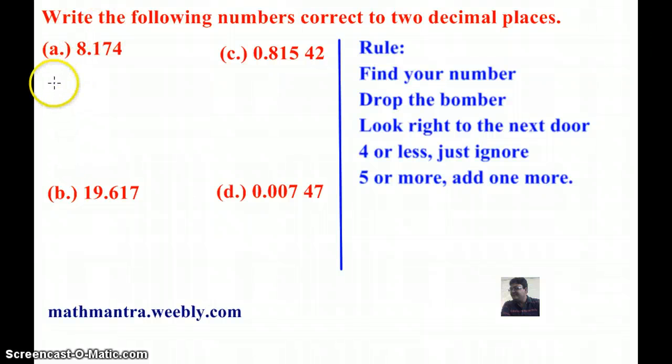Let's start with our first example, 8.174. Now, here I am supposed to round off a number correct to two decimal places. So, I am going to circle the number at the second decimal place or hundredth place.